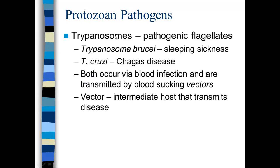Some other protozoan pathogens: trypanosomes have flagella and cause sleeping sickness. Trypanosoma brucei causes sleeping sickness; Trypanosoma cruzi causes Chagas disease. These are transmitted by vectors, primarily insects. A vector is an intermediate host — it's not a true or final host, and it just acts in transmitting the disease.